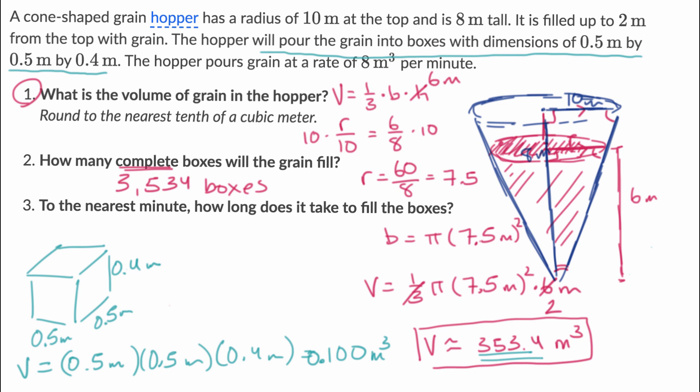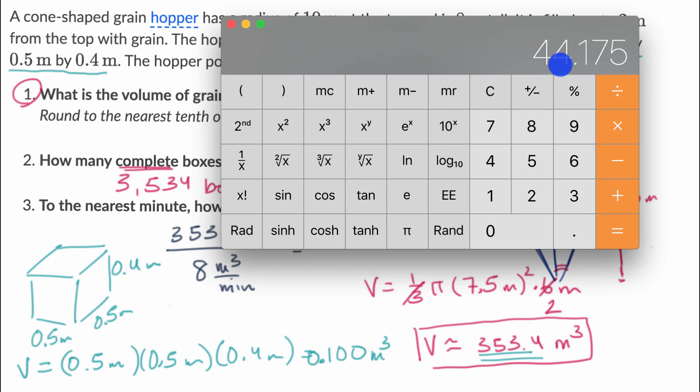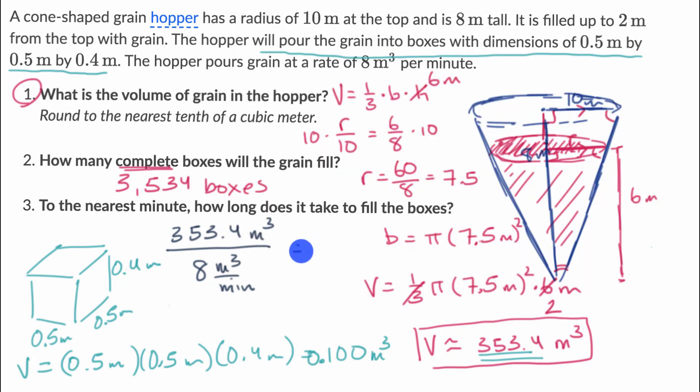So the answer over here is going to be our total volume. It's going to be 353.4 cubic meters, and we're going to divide that by our rate, eight cubic meters per minute. And that is going to give us 353.4 divided by eight, is equal to—and if we want to round to the nearest minute, 44 minutes is equal to approximately 44 minutes to fill all the boxes. And we're done.